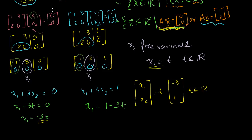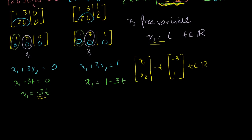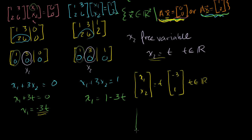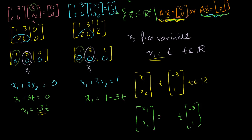The solution set for the second equation is (x1, x2) equal to (1, 0) plus t times (−3, 1). Here x2 is 0 plus t, and x1 is 1 minus 3t. So we have the vector (1, 0) plus scalar multiples of (−3, 1).